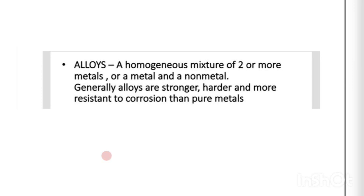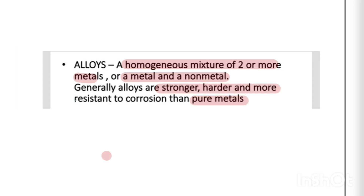Now let us talk about alloys. Alloys are homogeneous mixtures of two or more metals, or a metal and a non-metal. To prepare an alloy, we homogeneously mix either two or more metals, or a metal with a non-metal. Alloys are made to improve the properties of pure metals — they are stronger, harder, and more resistant to corrosion compared to pure metals.